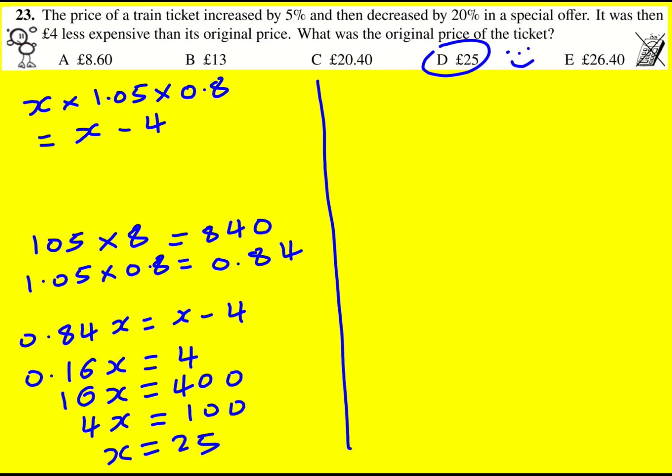So let's say that I've got the price of a ticket. I increase it by 5%. That means my new price is 105% of the original one. I'm not going to introduce an x into it for the time being.